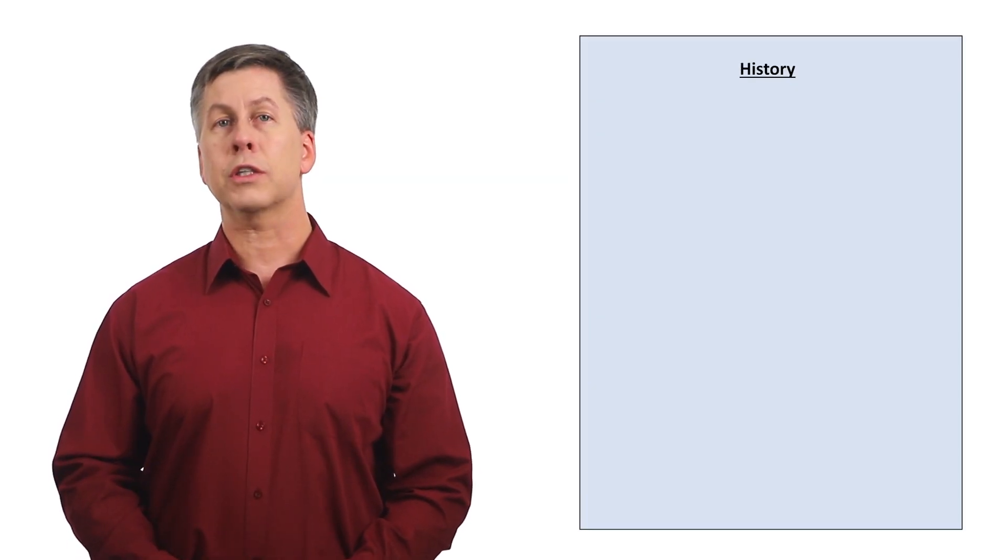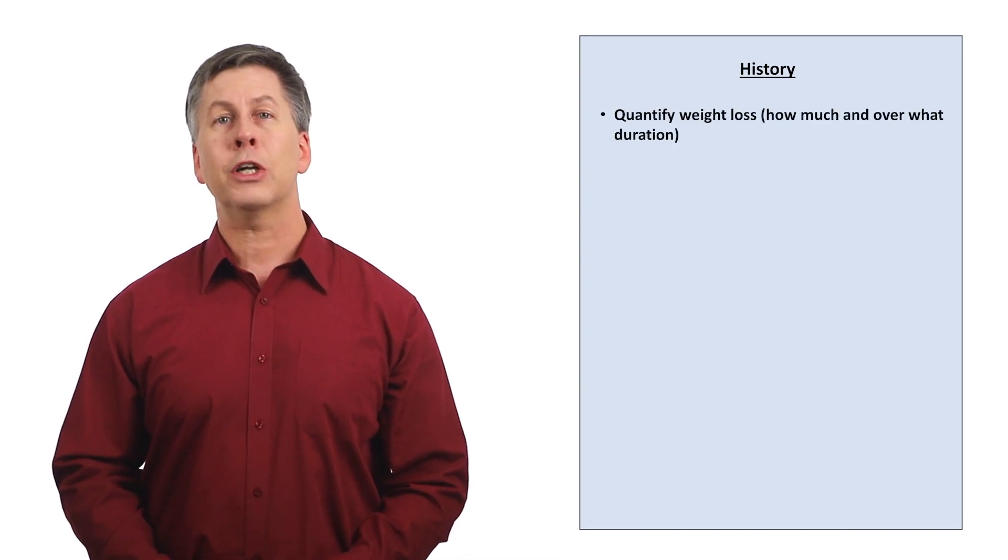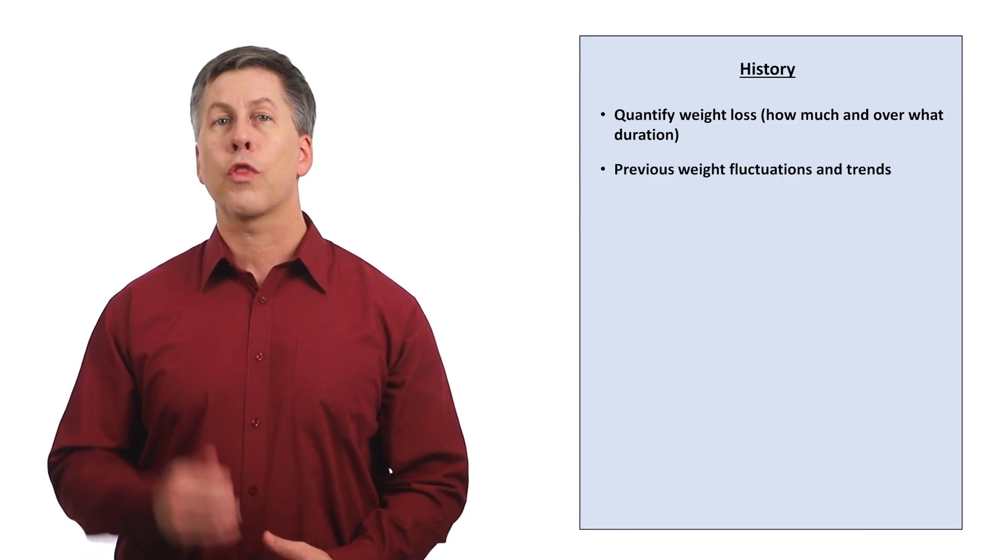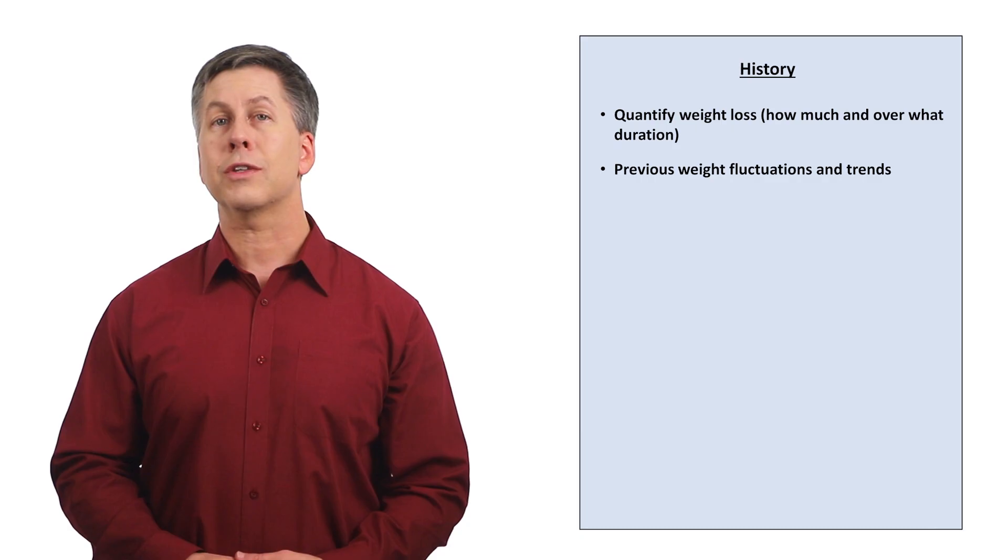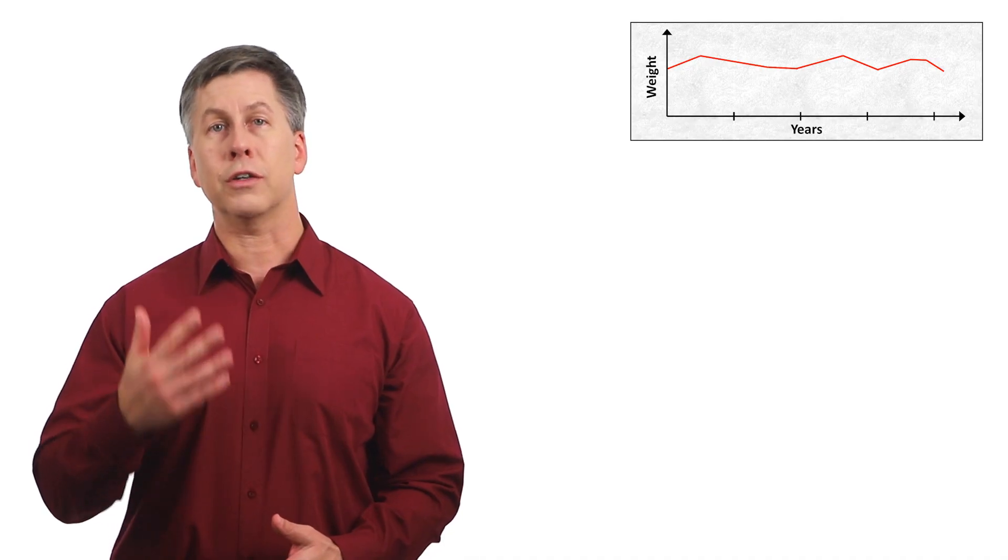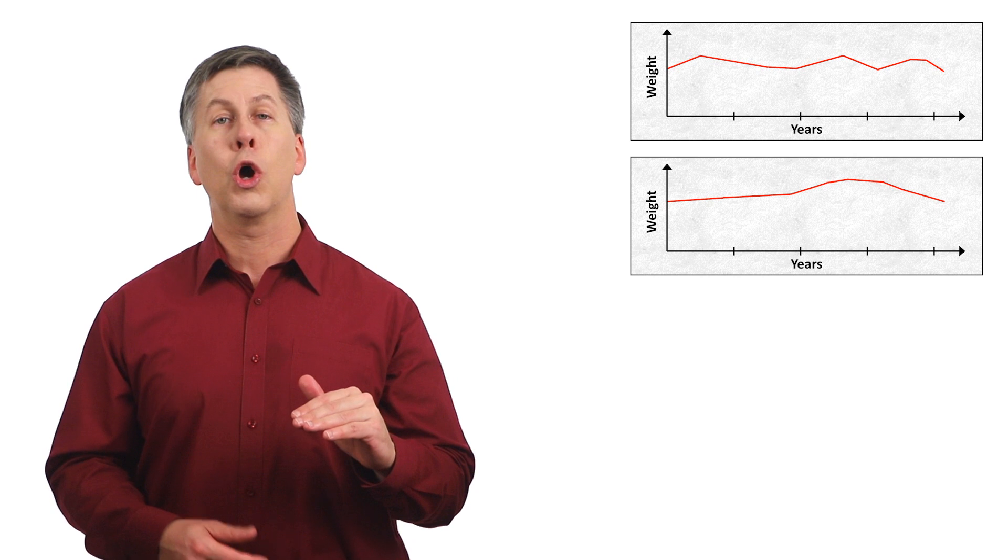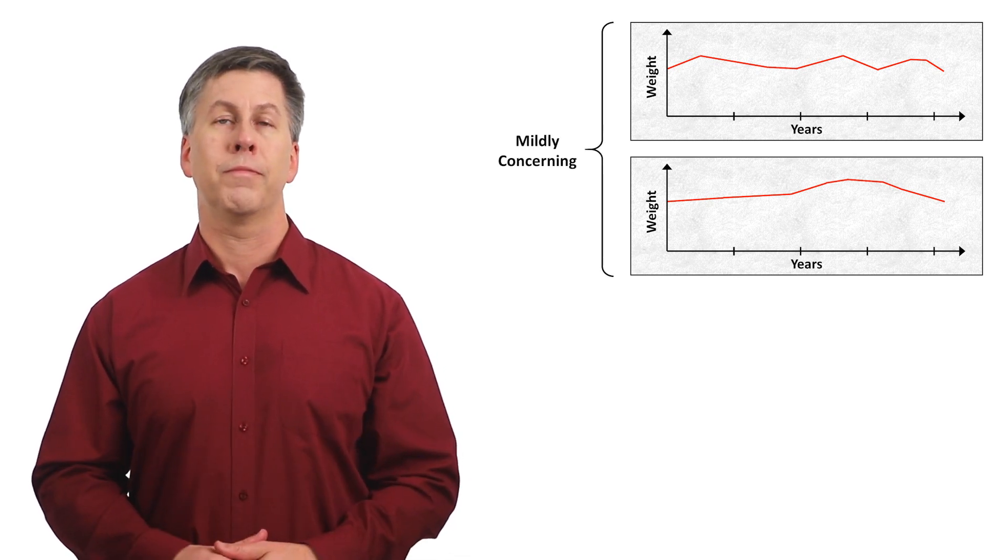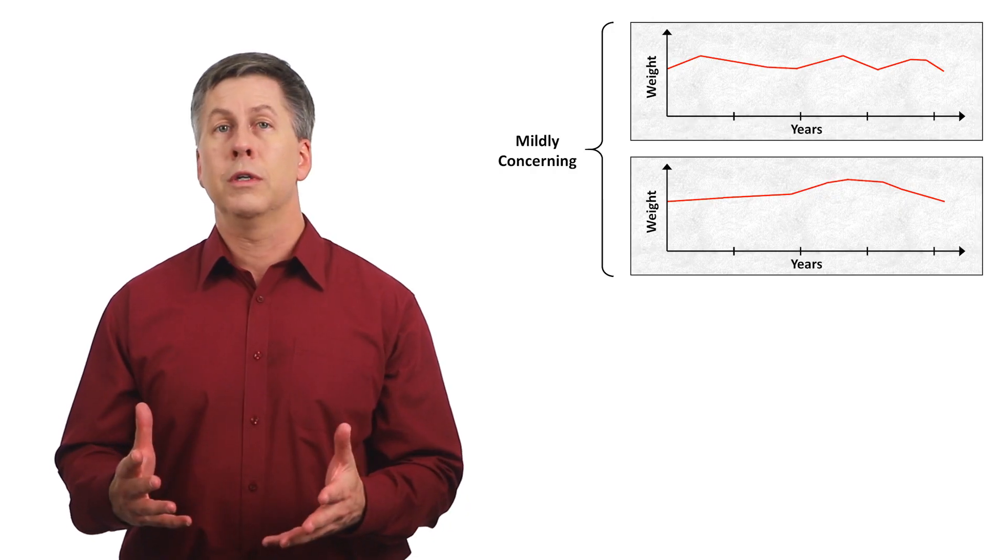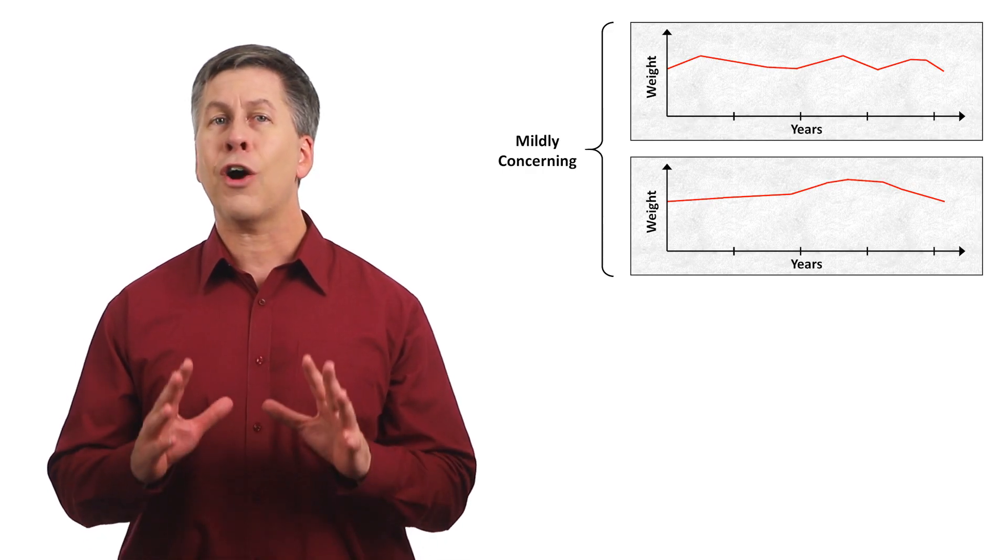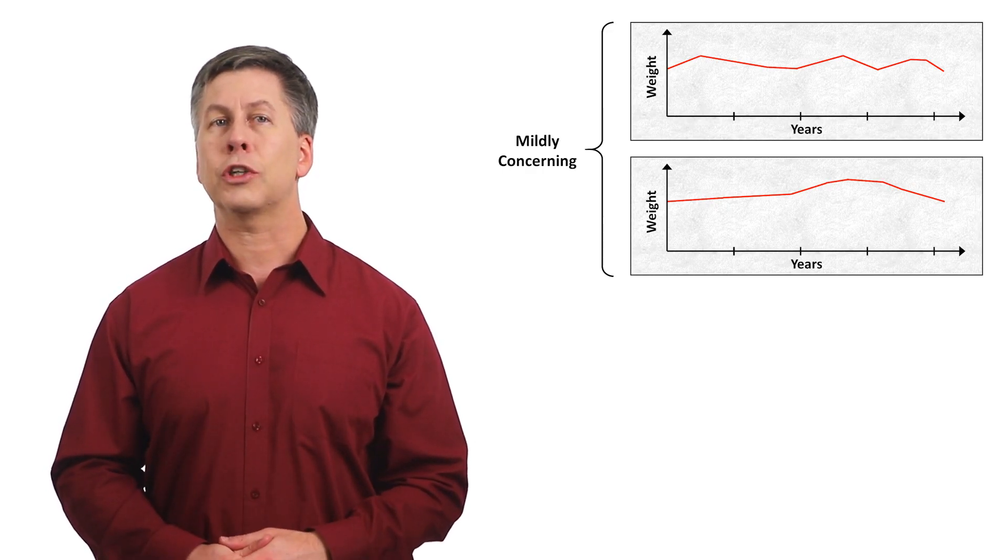When evaluating a patient with weight loss, the first step is to quantify it, how much and over what duration, along with examining previous weight fluctuations and trends. There are four general patterns of weight loss which warrant different degrees of concern. There is the patient whose weight repeatedly goes up and down over the years, along with a patient who has had a very long stable baseline weight, followed by an uptrend, and then a downtrend back to that previous baseline. Both of these patterns are mildly concerning. That's not to say that you should ignore them. On the contrary, you want to understand why your patient has been experiencing this, but they are relatively less likely to be indicative of a potentially life-threatening problem.